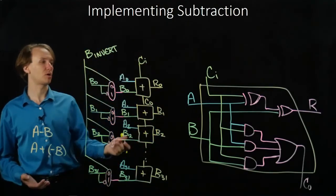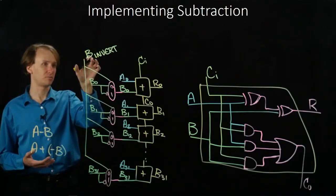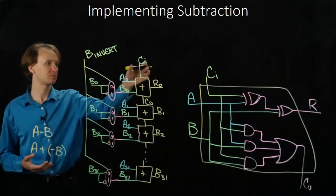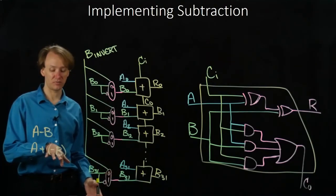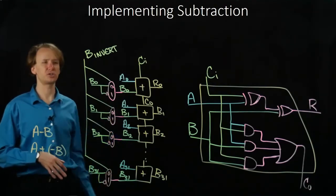And then I have this carry-in line. So I'd set that to 1. Now I'd be adding 1 more. So I'd invert all of my bits and add 1. So I'd get the 2's complement of B. So now I'd have negative B. And I can just do my addition as normal.